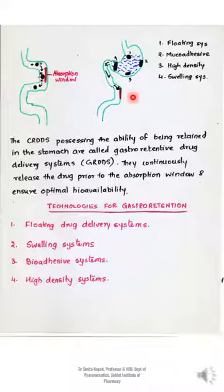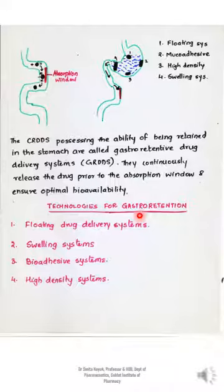Drugs that are absorbed in the proximal part of the gastrointestinal tract and drugs that are less soluble or degraded in alkaline pH benefit from residing in the acidic region for a longer period of time. This will also help to reduce the dose size. Thus, for local and sustained drug delivery to the stomach and proximal small intestine for treating certain conditions, prolonged gastric retention offers several advantages including improved bioavailability, therapeutic efficacy, and possible reduction in dose size.